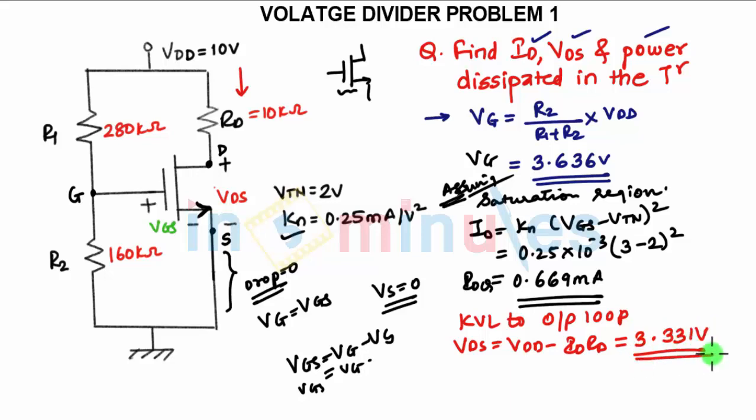Now last part is to find the power dissipated. In this case we can find the power dissipated as the output voltage multiplied by the output current. You have VDS as the output voltage and ID is the output current. So when you multiply these two values, you will get the power as 2.228 milliwatts. So this is the power dissipated in the transistor.